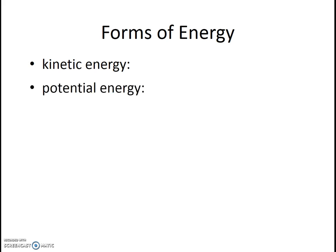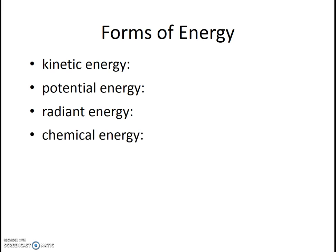Potential energy is the energy of position, which mathematically can be expressed as mgh — m being mass, g the acceleration due to gravity, and h the height. Radiant energy is the energy in the form of electromagnetic waves. Chemical energy is energy stored in chemical bonds.